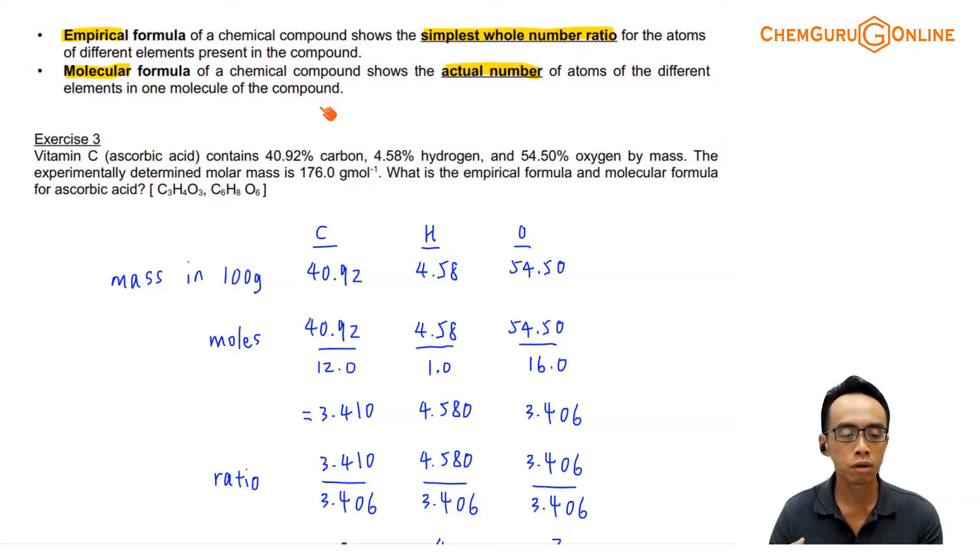So comparing empirical versus molecular formula, which one is more useful? Obviously, molecular formula is better, right? Because at least I know how many carbon, how many hydrogen, how many oxygen we have inside the molecule or inside the compound. We can actually try to figure out what is that compound.